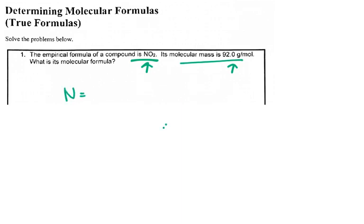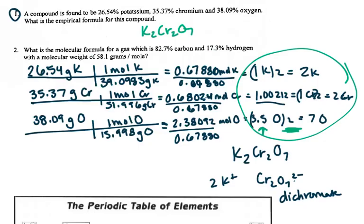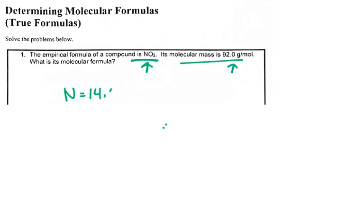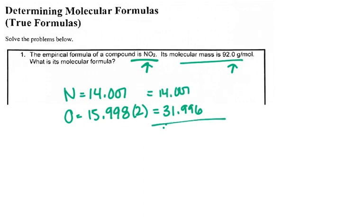Nitrogen is 14.007, and I only have one of those. Oxygen is 15.998, but I have two of those, so I'm going to multiply that out and get 31.996. Now I'm going to add those together to get my molar mass, and I get 46.003 grams per mole. That's my molar mass of NO2.